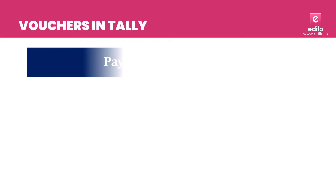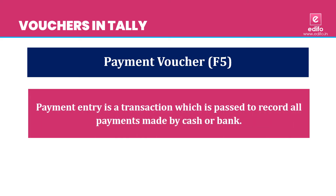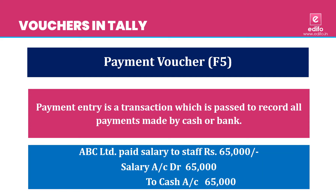The next voucher is Payment Voucher, with shortcut key F5. Payment entry is a transaction which is passed to record all payments made by cash or bank. Here you can only pass the journal entries made by cash or bank. For example, ABC Limited paid salary to staff Rs. 65,000. The nature of this transaction is a payment, so the journal entry is: salary account debit 65,000 to cash account. You can pass this journal entry using Payment Voucher.